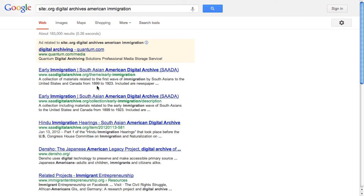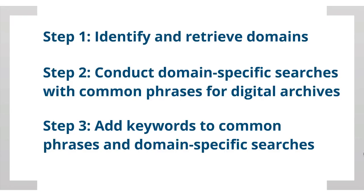But beware: if you want to search non-English speaking domains such as .fr or .es, you have to enter your search queries in the respective language. To recap, to locate digital archives on the public web, start by identifying domains or areas related to your topic. Then, conduct domain-specific searches with common phrases for digital archives. Finally, add keywords to these common phrases and specific domain searches to produce a targeted subset of results.